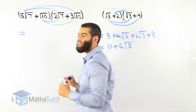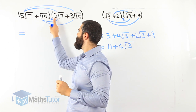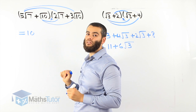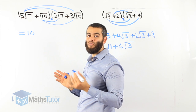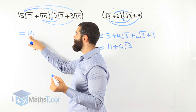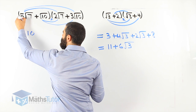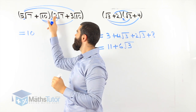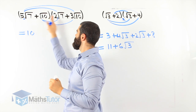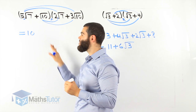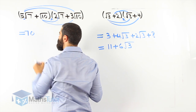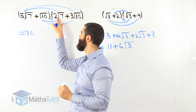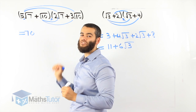5 root 7 times 2 root 7: root 7 times root 7 is 7, and 5 times 2 is 10, so 10 times 7 is in fact 70. Therefore 5 root 7 times 2 root 7 equals 70.